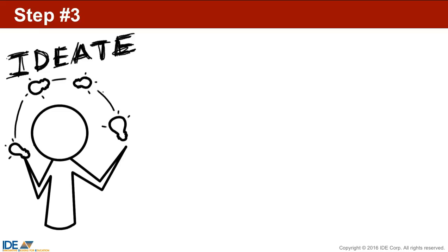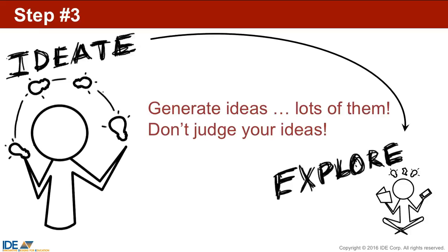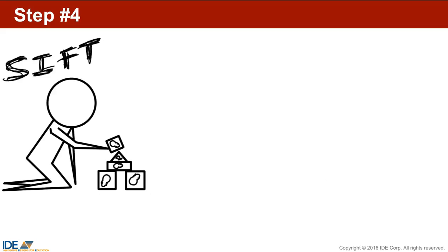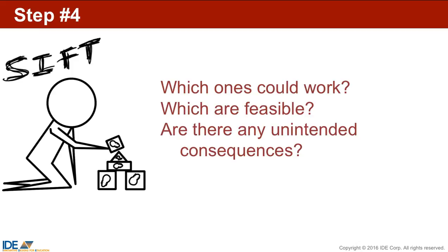Soon you'll start generating ideas. Step 3 is to ideate — start generating ideas, and generate lots of them. Don't just accept the first idea you find, and stop yourself from deciding if they'll work or not; just keep generating ideas. You may find you need to return to explore the problem more as you generate ideas. Next, you'll sift through all those ideas looking for the best ones — which ideas could solve the problem? Narayana had probably generated many ideas for making cutlery from biodegradable materials and had to select his favorite.